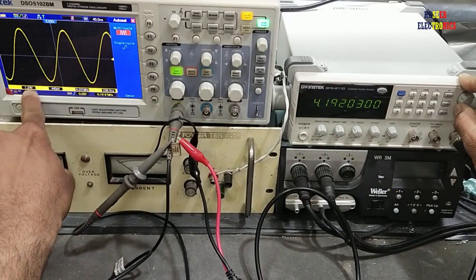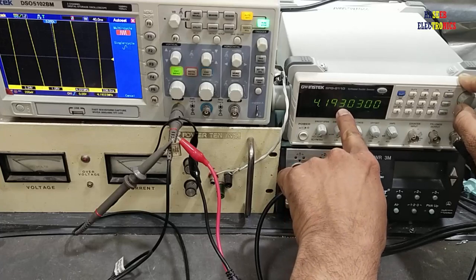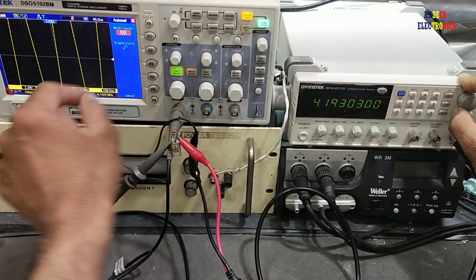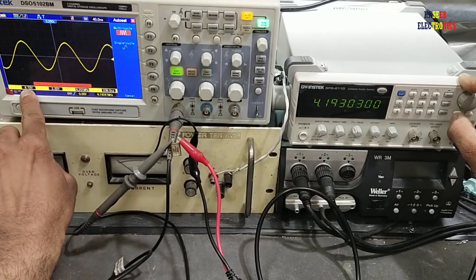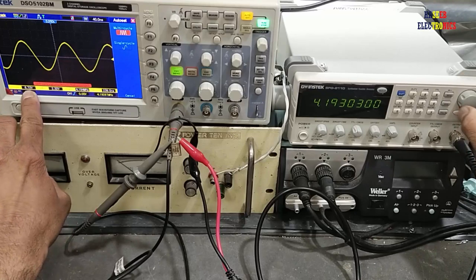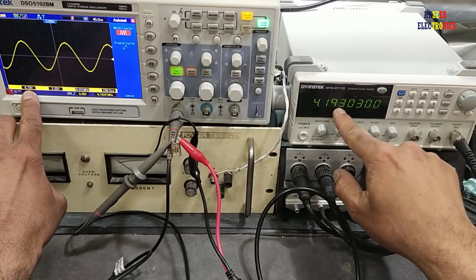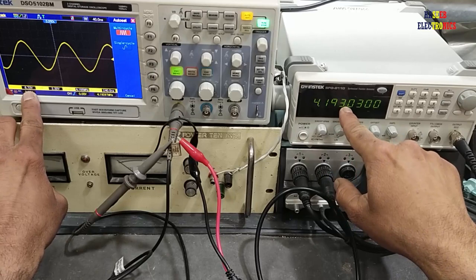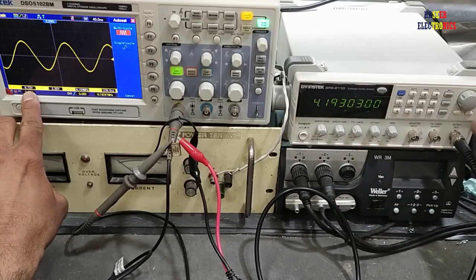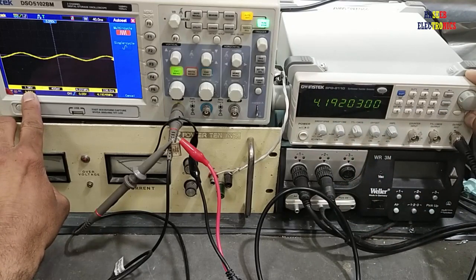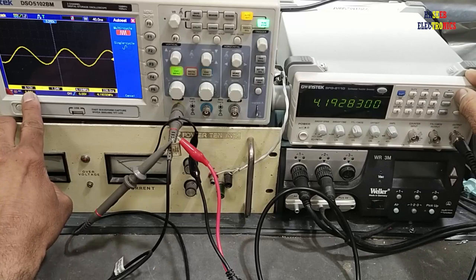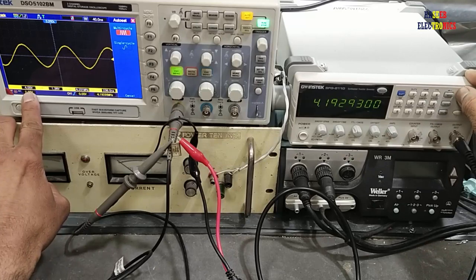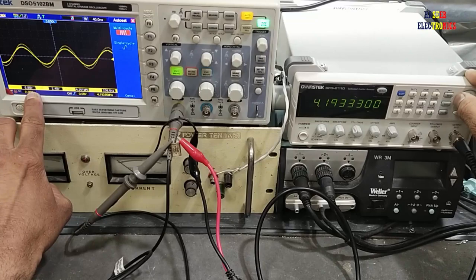At 4.193 megahertz, the amplitude is 6.72 volts. This is a significant increase, indicating we are near the resonant frequency. Now let's fine-tune to find the exact frequency by observing how the voltage changes when we adjust the decimal places.